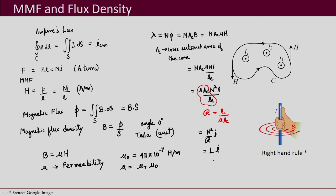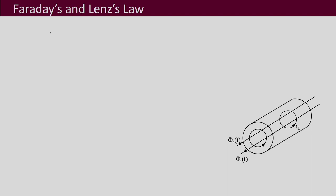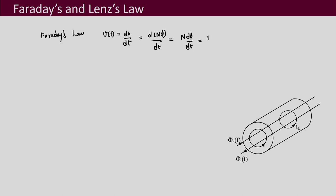So L equals N² divided by reluctance. Another important law is Faraday's law: V(t) = d·lambda/dt. If there is a time-varying magnetic flux phi(t) passing through a closed stationary loop, it induces a voltage equal to d·lambda/dt, which can also be written as d(N·phi)/dt = N·(d·phi/dt) = L·(di/dt). That is Faraday's law.